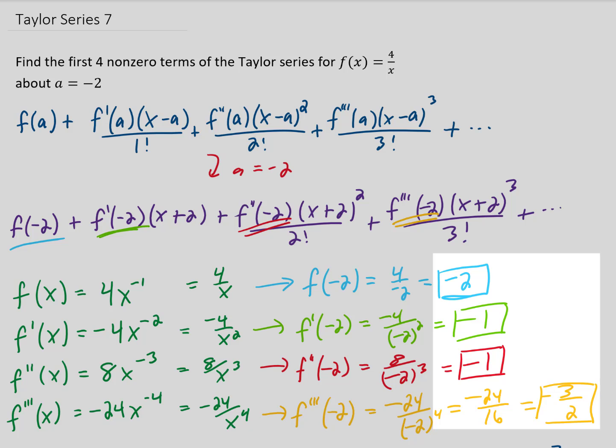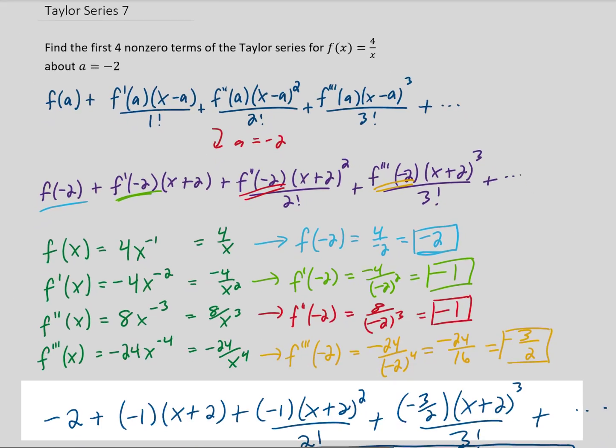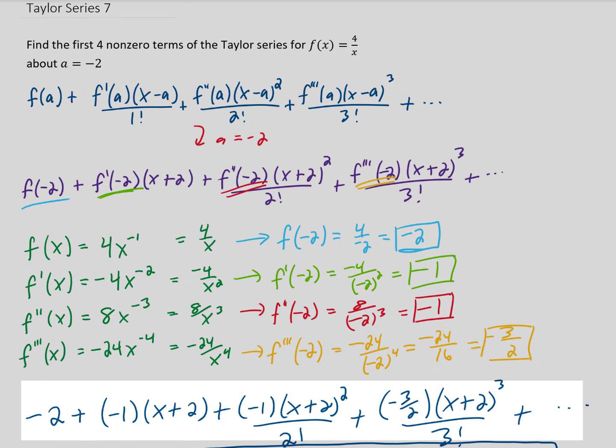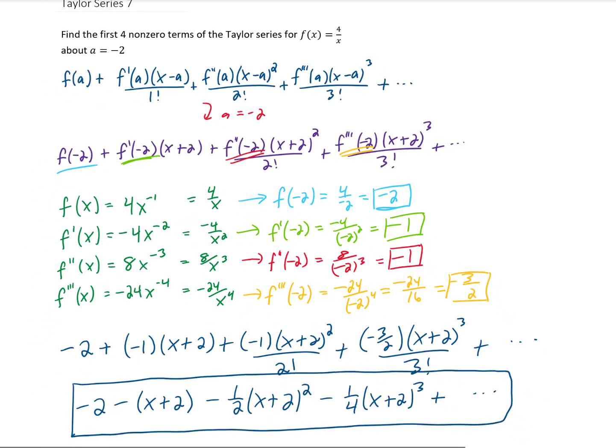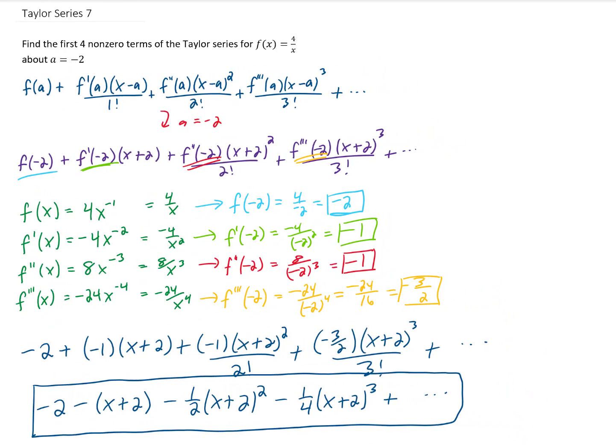Okay, so what we're going to do next is plug each of these four coefficients into this Taylor series up here. And that is going to give us this line of work right here. And doing one step of simplification to simplify and reduce all of the coefficients is going to give us our final answer. Okay, so that problem was much easier than the previous problem that we did.